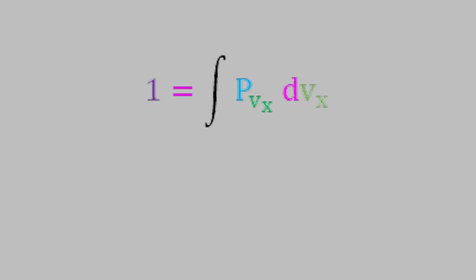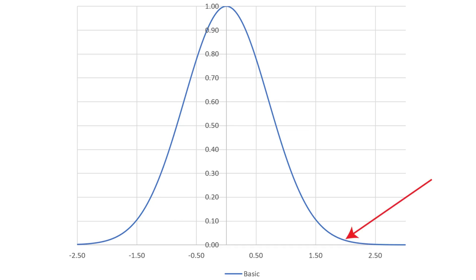The sum of all the probabilities for this distribution must be 1, and we can write that using this equation. This is equivalent to saying that the area under the curve described by the normal distribution must be equal to 1. There are a couple of things to notice about this integral. First, notice that the variable is vx, so that's what we're taking the integral with respect to. Also, the limits of the integral are equal to positive and negative infinity. That's because there's technically no limit to the possible velocities that a molecule could have, regardless of the temperature.